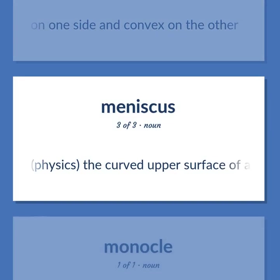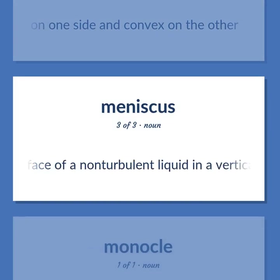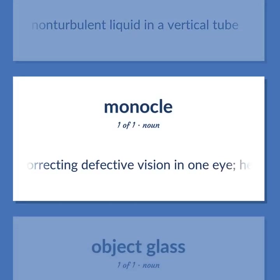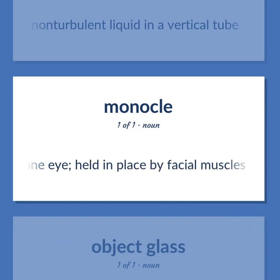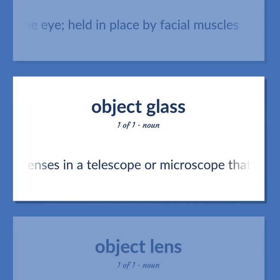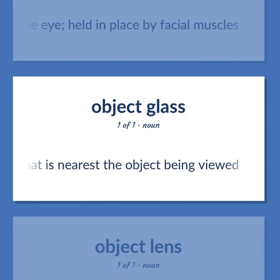Lens types: meniscus (physics) — the curved upper surface of a non-turbulent liquid in a vertical tube. Also: monocle — a lens for correcting defective vision in one eye, held in place by facial muscles. Also: objective — the lens or system of lenses in a telescope or microscope that is nearest the object being viewed.